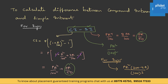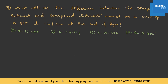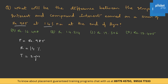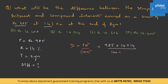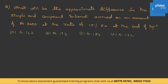Let's look at the application of this formula. What will be the difference between the simple interest and compound interest earned on a sum of rupees 985 at 14% interest at the end of two years? Given: P = 985, r = 14%, t = 2 years. Using the formula difference = Pr²/100²: difference = 985 × 14 × 14 / (100 × 100) = rupees 19.306, which is option C.